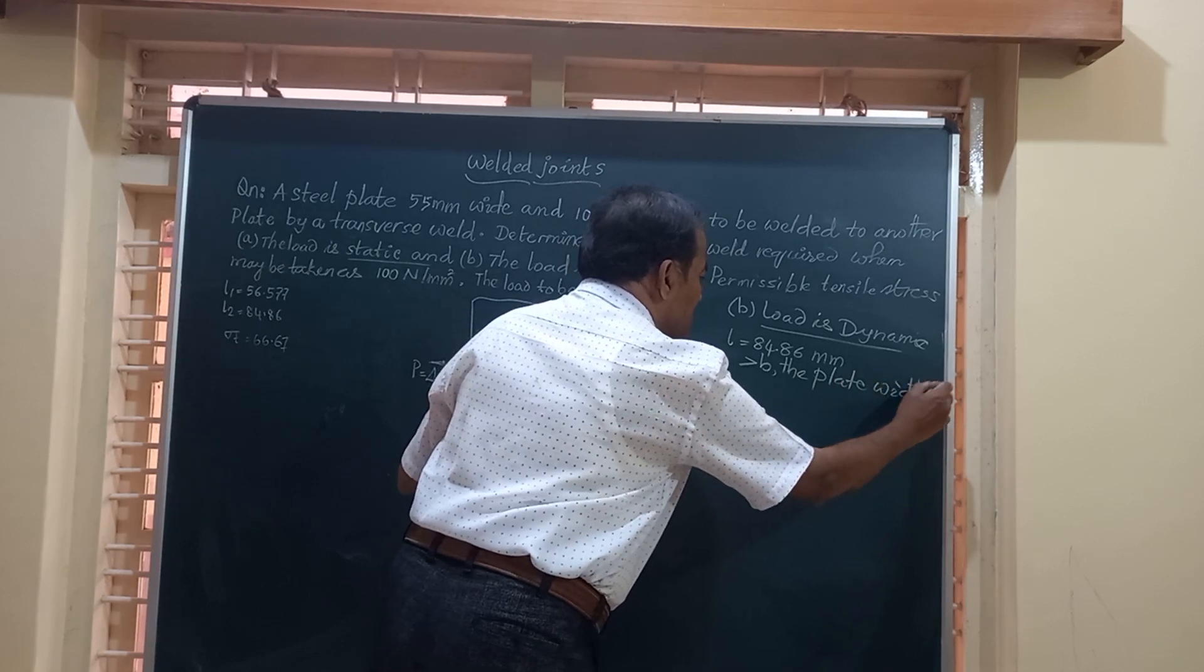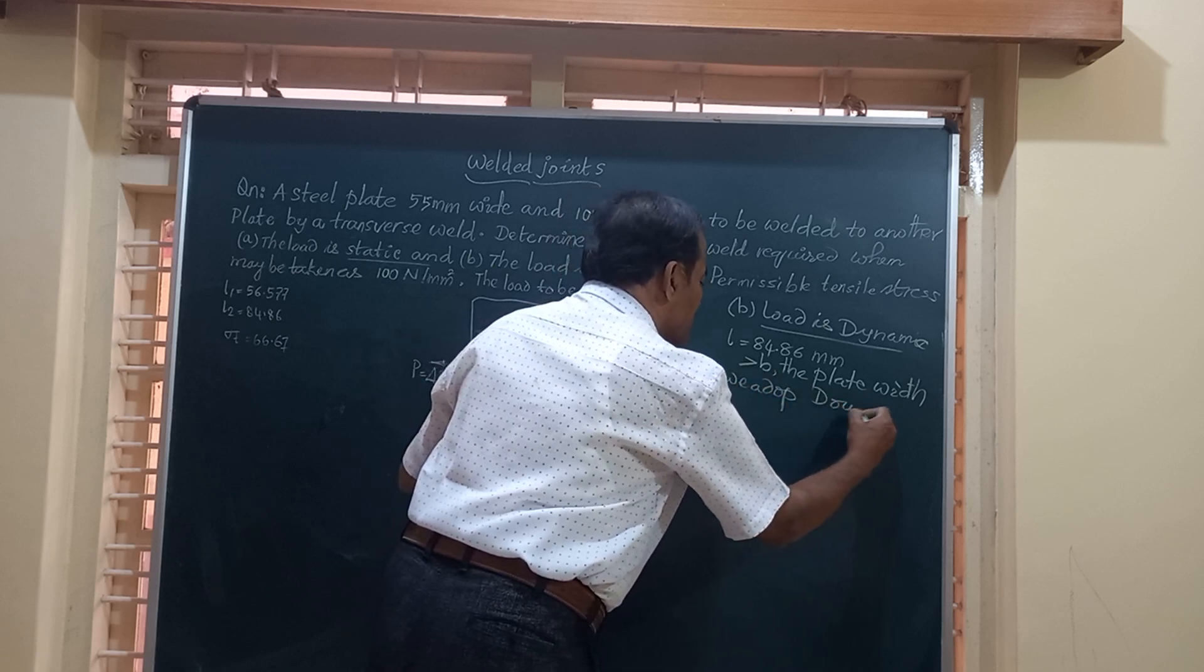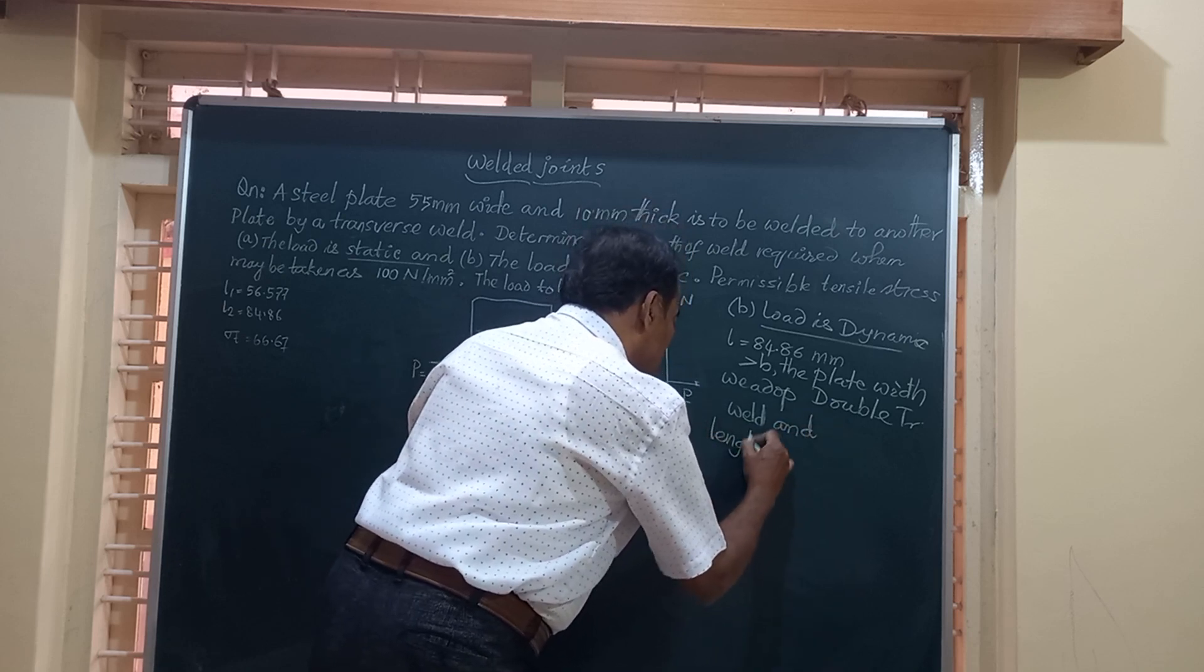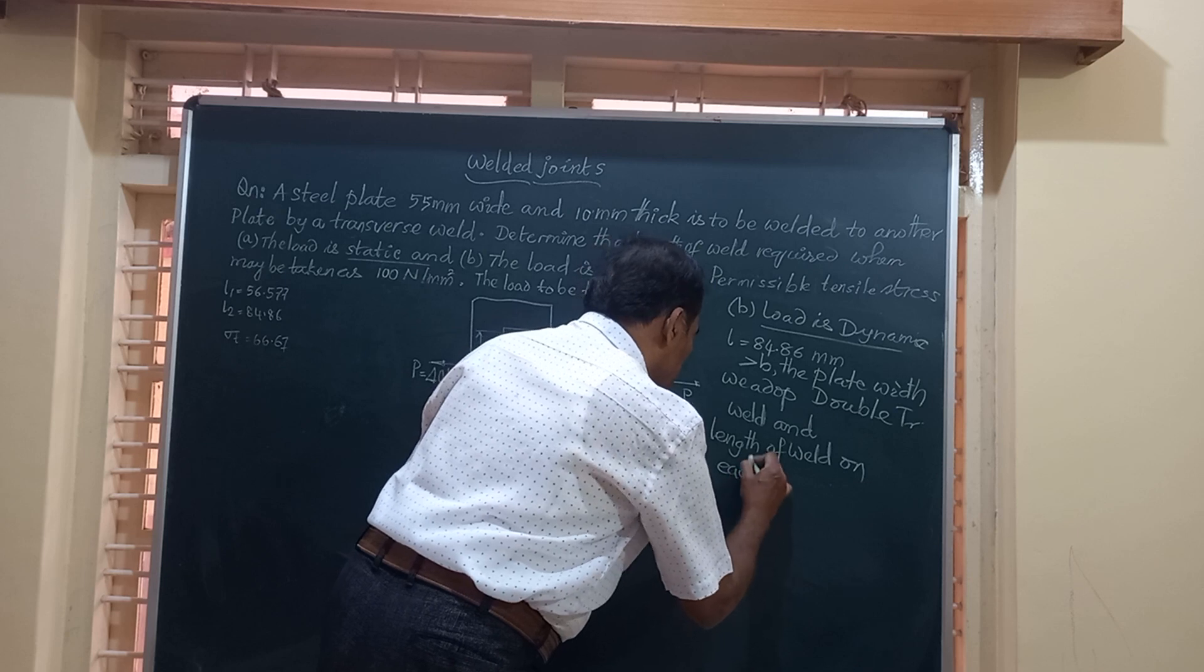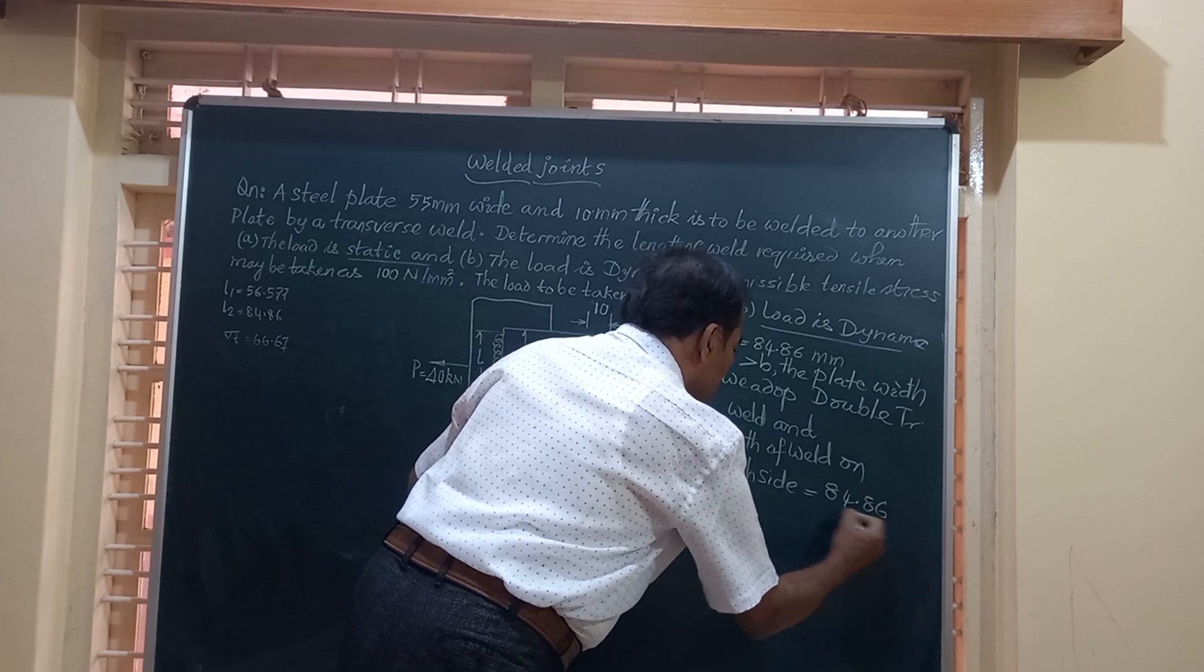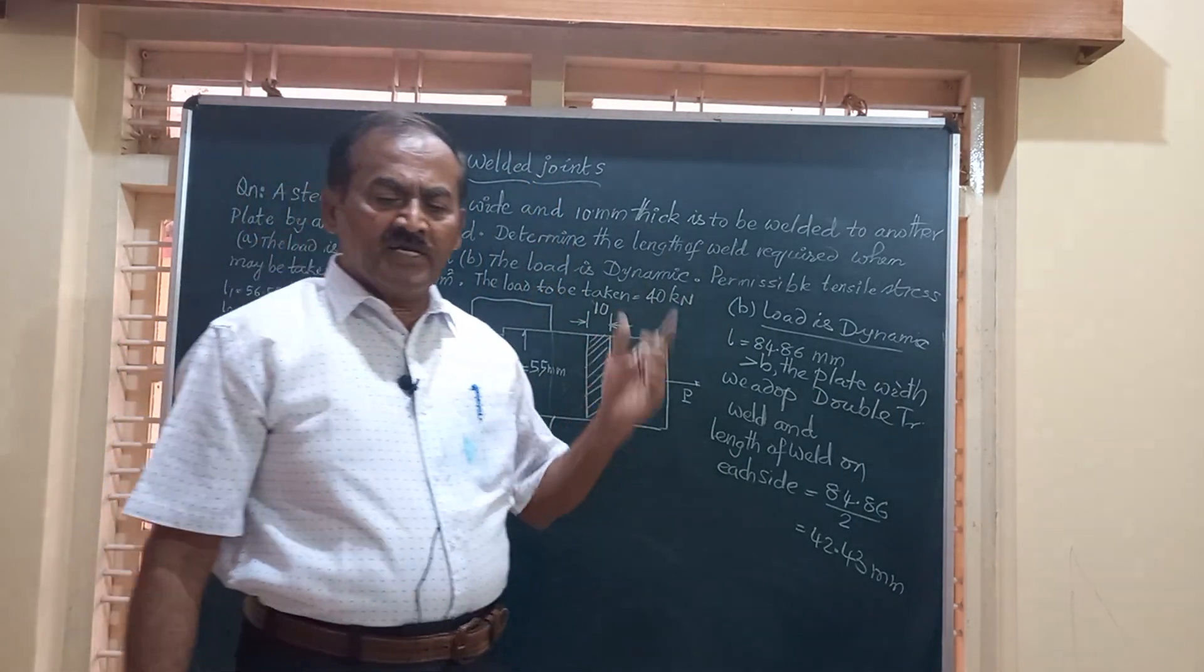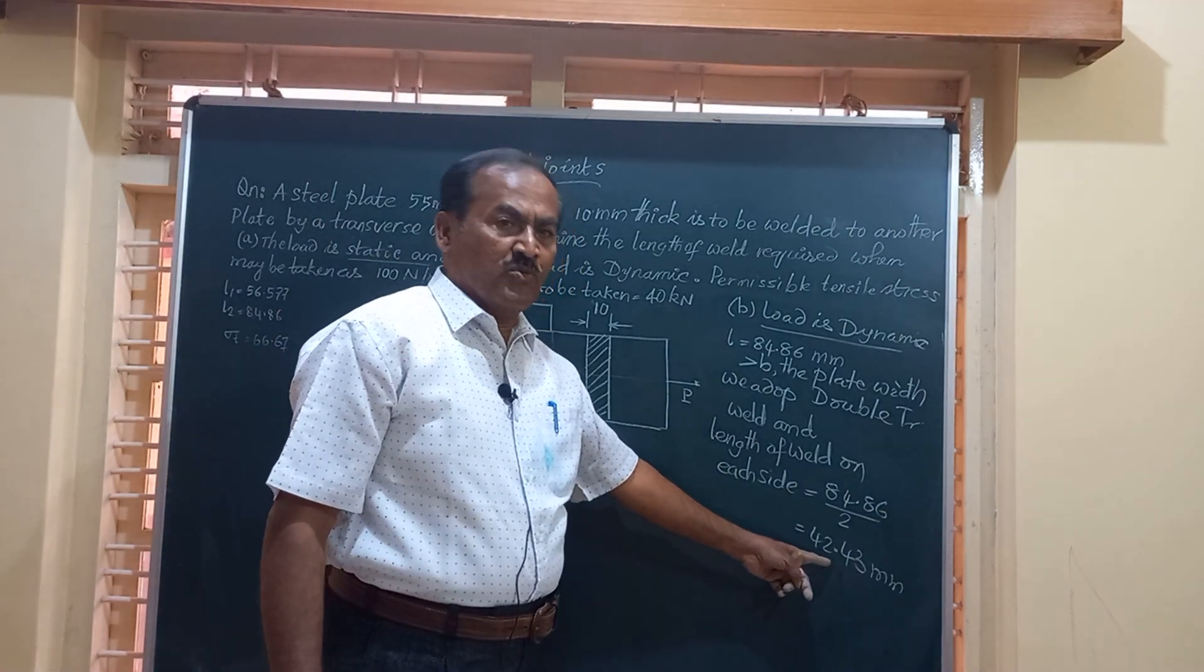And hence, we adopt double transverse weld, and the length of weld on each side is equal to 84.86 divided by 2, that is 42.43 mm. Again, as you have done in case one, you will have to add 10 millimeter extra for each of these welds on both the sides.